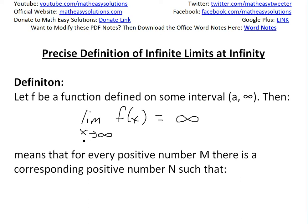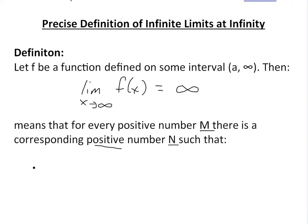So basically there's a limit at infinity or x approaches infinity and it's an infinite limit. You get infinity as the limit. And this means that for every positive number M there is a corresponding positive number N, these are both greater than zero, such that you'll have f(x) is greater than this M number whenever x is greater than N right here.